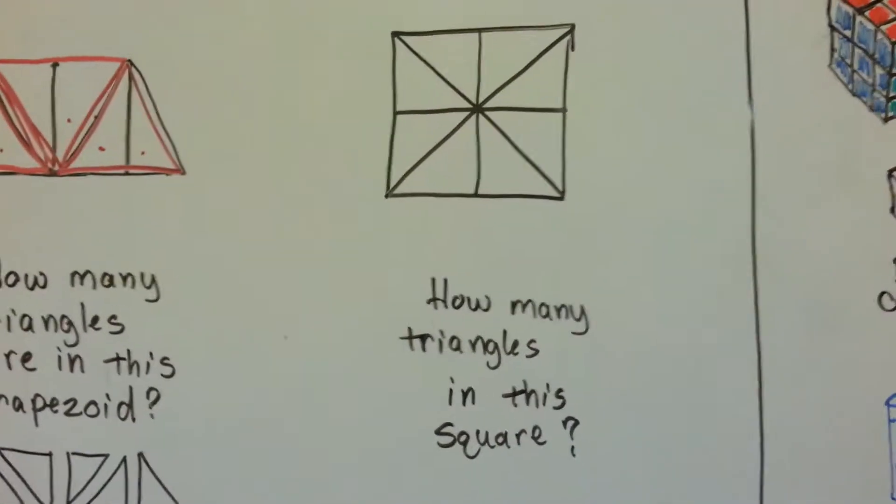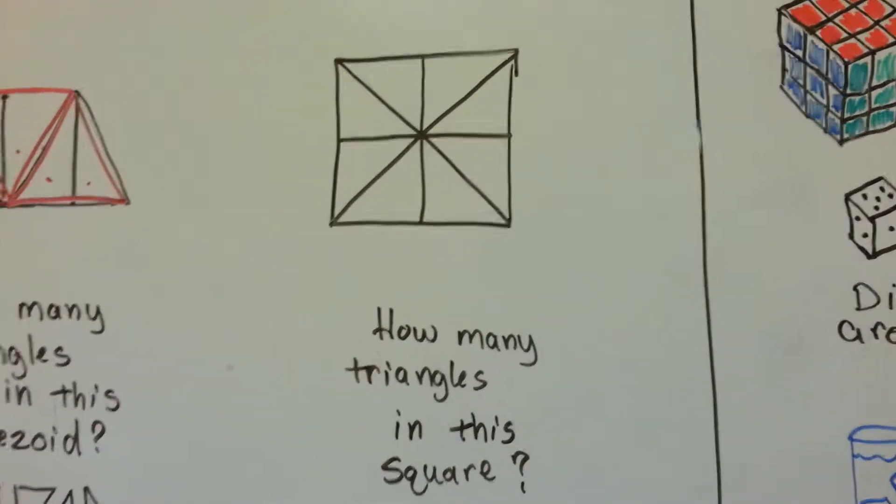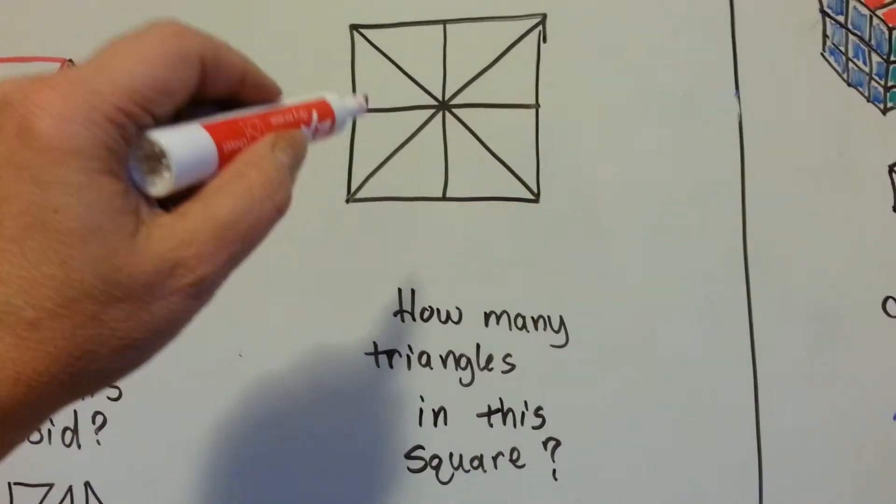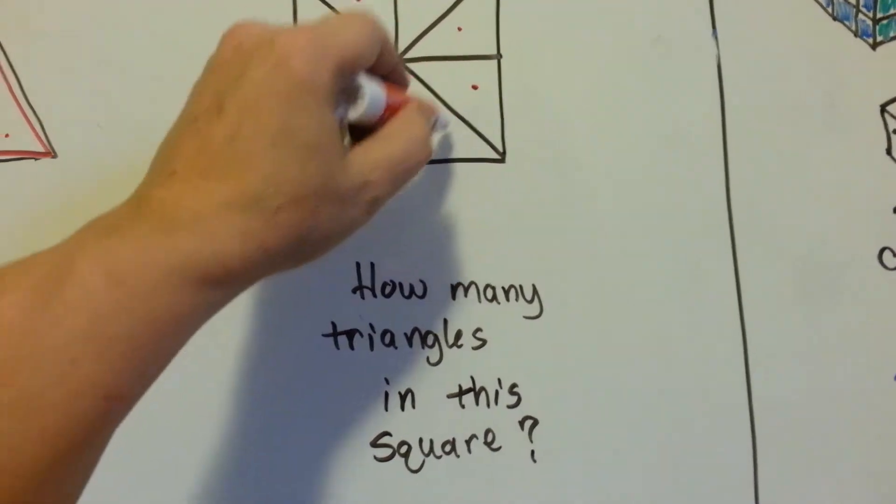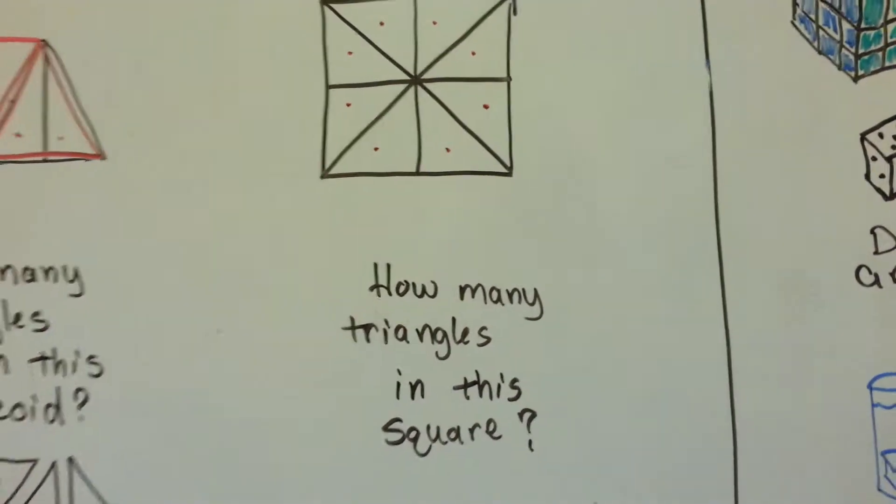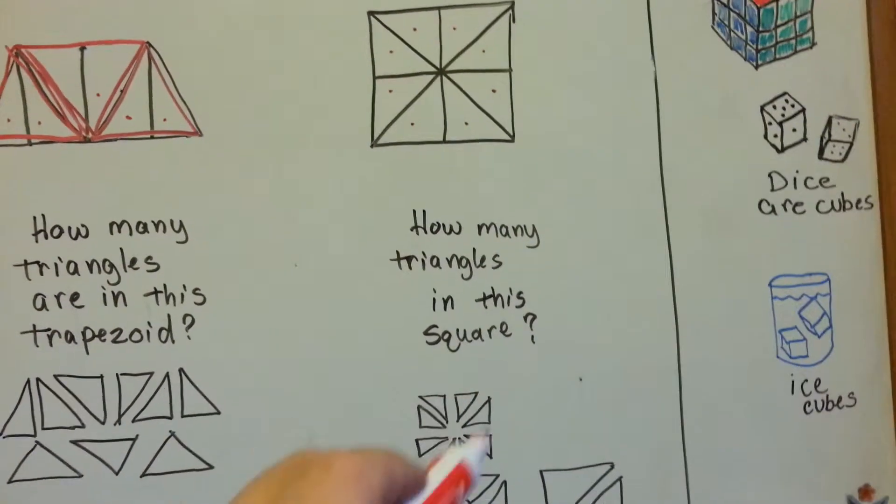Now look at how many triangles do you think are in this square? Let's count the obvious ones of one, two, three, four, five, six, seven, eight. But now look. Here's the eight.